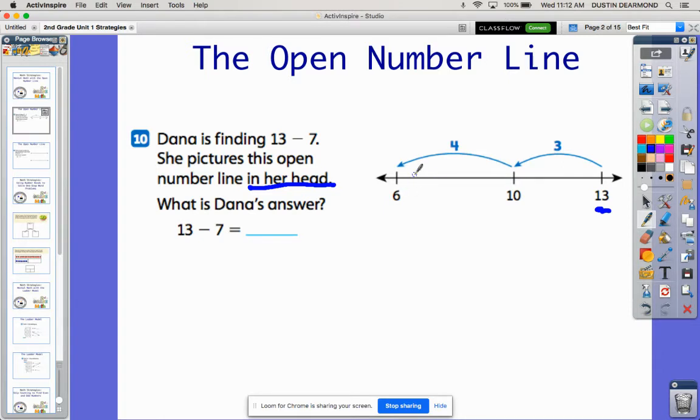So let's look at all the pieces of our open number line. We have the number we started with, we had some numbers that we jumped to, and then we had some numbers that here at the top showing how far we jumped. So for those pieces we want to find them in our problem. Obviously again, 13 is the number we start with.